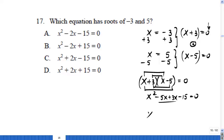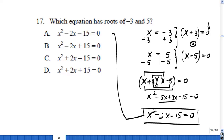Combine these two like terms: x squared minus 2x minus 15 equals 0. That's the equation you have to look for, and that equation is obviously A.